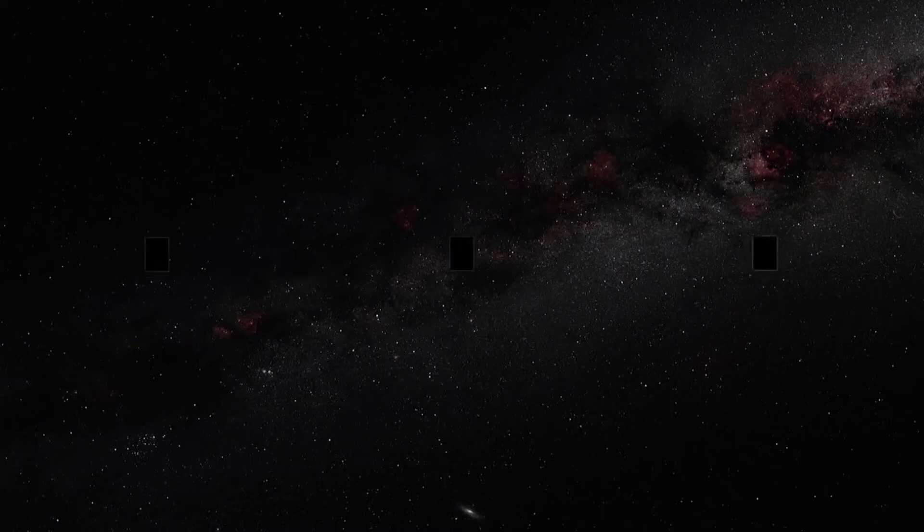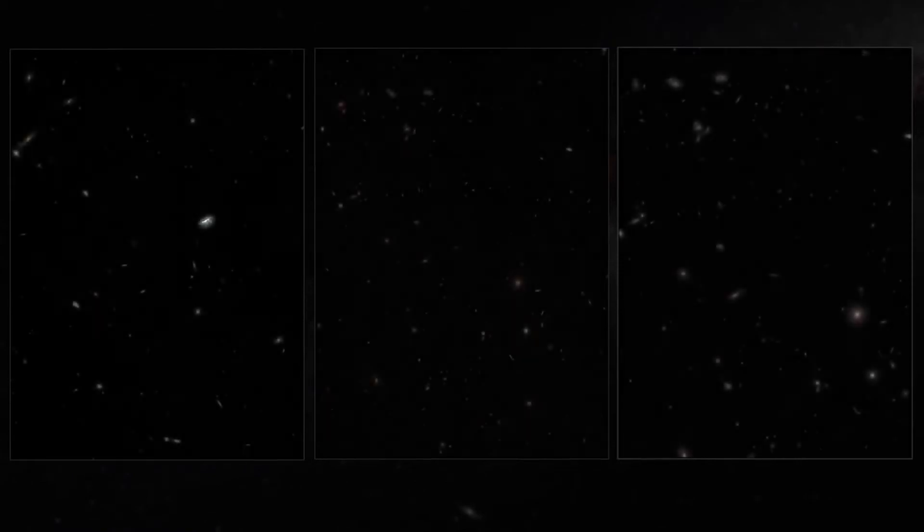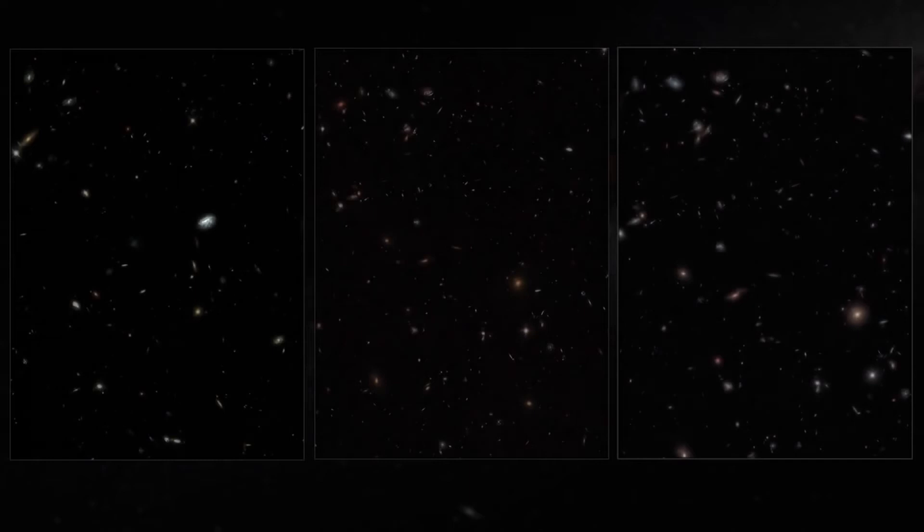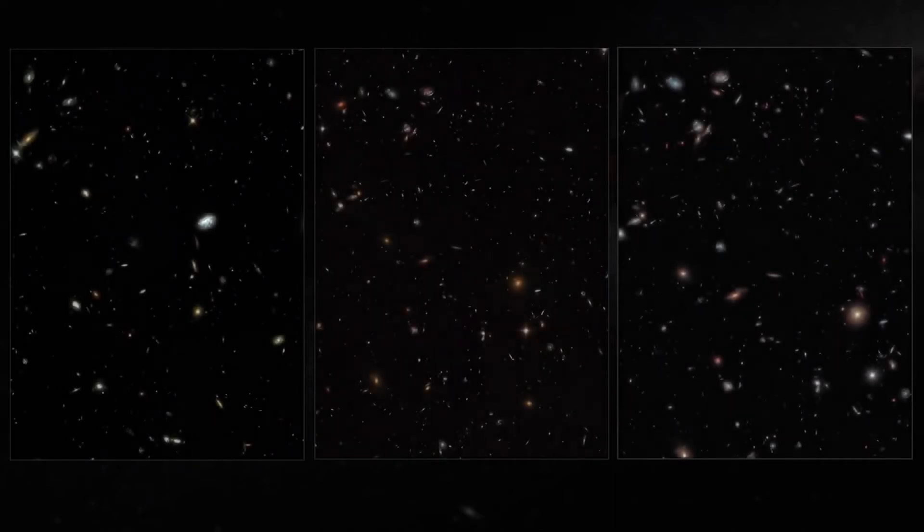An early and memorable result is the Hubble Deep Fields. These are extended observations of a particular region of the sky intended to reveal faint objects by collecting the light from them for an appropriately long time.